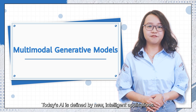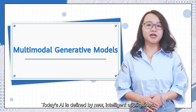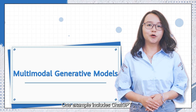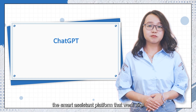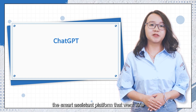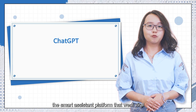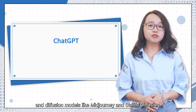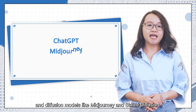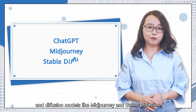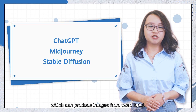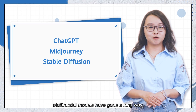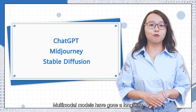Today's AI is defined by new intelligent applications. One example includes ChatGPT, the smart assistant platform that went viral a couple of months ago, and diffusion models like MidJourney and Stable Diffusion, which can produce images from word input. Multi-modal models have gone a long way.